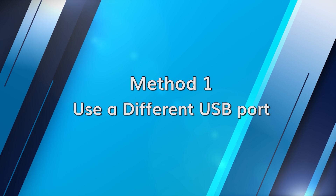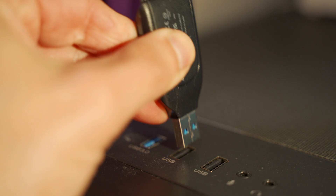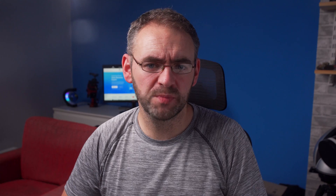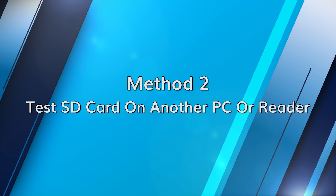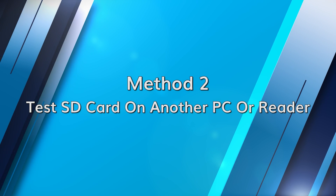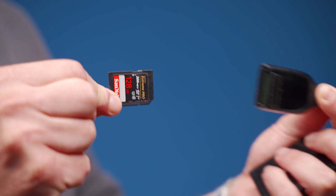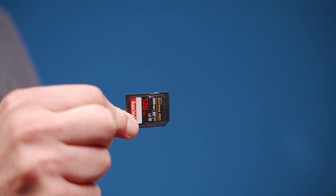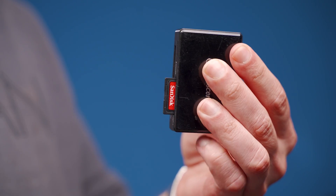Let's start with a straightforward method. Changing the USB port can sometimes resolve the issue. Gently remove the SD card from the slot, then insert it into a different USB port, and wait a few seconds to see if it gets detected. If changing the USB port didn't work, then try testing the SD card on another computer or in a different reader. This helps verify if the issue is with the card or the computer's reader. Remove the SD card from the computer and insert it into another computer or a new card reader. If it's then detected, the issue might be with the original card reader.